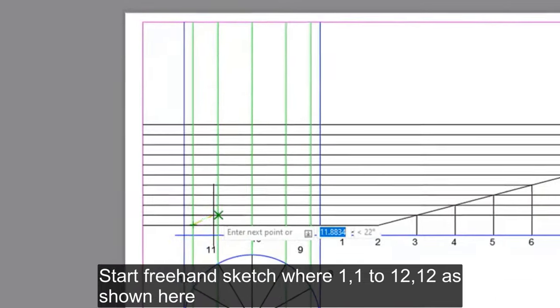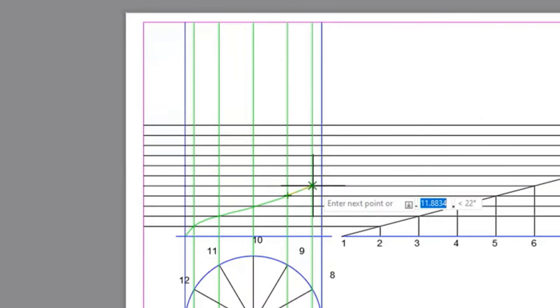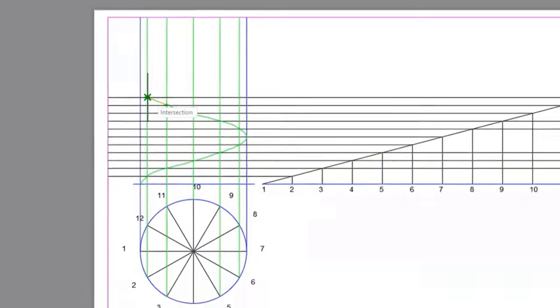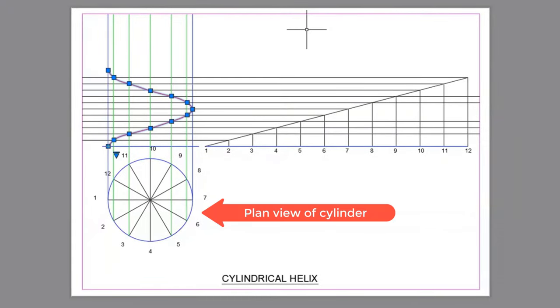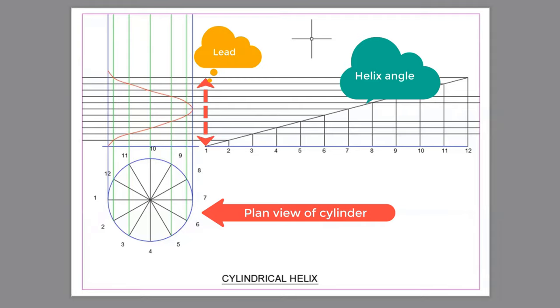Start freehand sketch where 1,1 to 12,2. Now we have completed cylindrical helix. Use the plan view of cylinder, helix angle and lead.